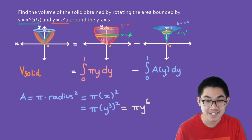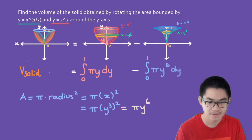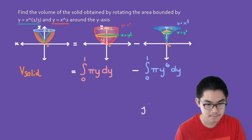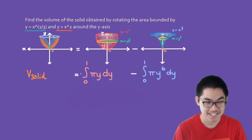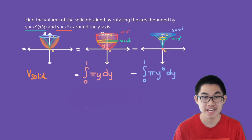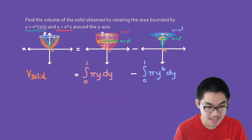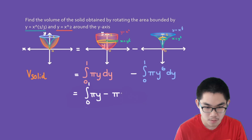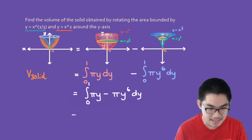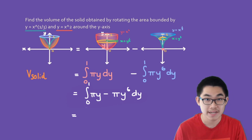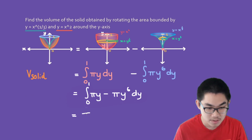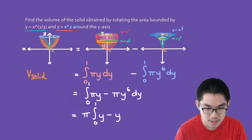Now let's put this back into our integral. Since both integrals have the same boundaries, we can combine them into one integral. The volume of the solid is the integral from 0 to 1 of pi times y minus pi times y to the power of 6, dy. Since pi is a constant, we bring it outside: pi times the integral from 0 to 1 of y minus y to the power of 6, dy.